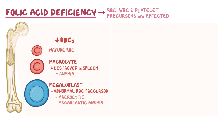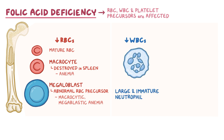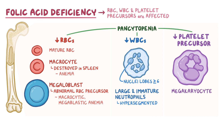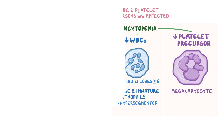Folate deficiency also affects white blood cell production, so the bone marrow starts releasing large, immature neutrophils. Immature neutrophils are also hypersegmented, which means their nuclei have six or more lobes. Finally, severe folate deficiency may also decrease bone marrow production of platelet precursors, which are called megakaryocytes. So when all three blood cell lines are affected, this results in pancytopenia, which is when red blood cell, white blood cell, and platelet count is low, and this happens only in cases of severe folate deficiencies.